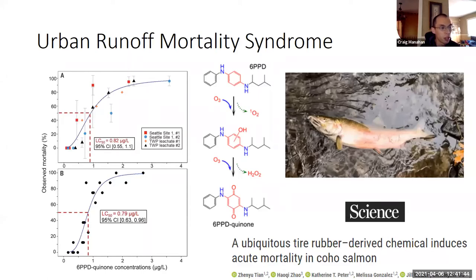Symptoms include lethargy and loss of equilibrium, and it can be caused by roadway runoff. This syndrome has been investigated for over 10 years, but the exact pollutants in stormwater that cause it had not been identified until last year. In December 2020, researchers from UW and WSU, among others, published a paper in the journal Science identifying 6-PPD-quinone as being responsible for URMS.